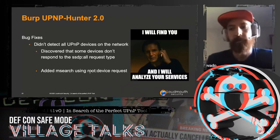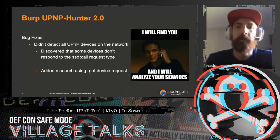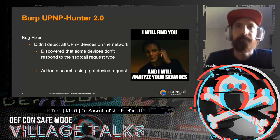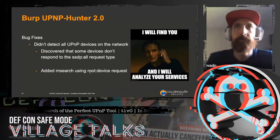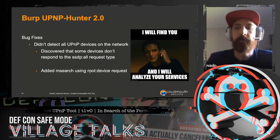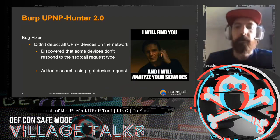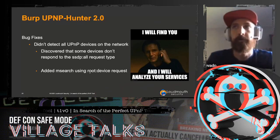The first bug was that it didn't detect all UPnP devices on the network. This comes down to some devices just not following the spec — it was sending mSearch using ssdp:all, which all devices are supposed to respond to, but some don't. So I added a second mSearch using the root device tag. Not only the root device responds to that rather than all the different services, and that seemed to work better for the devices on my network, allowing me to find all of them.